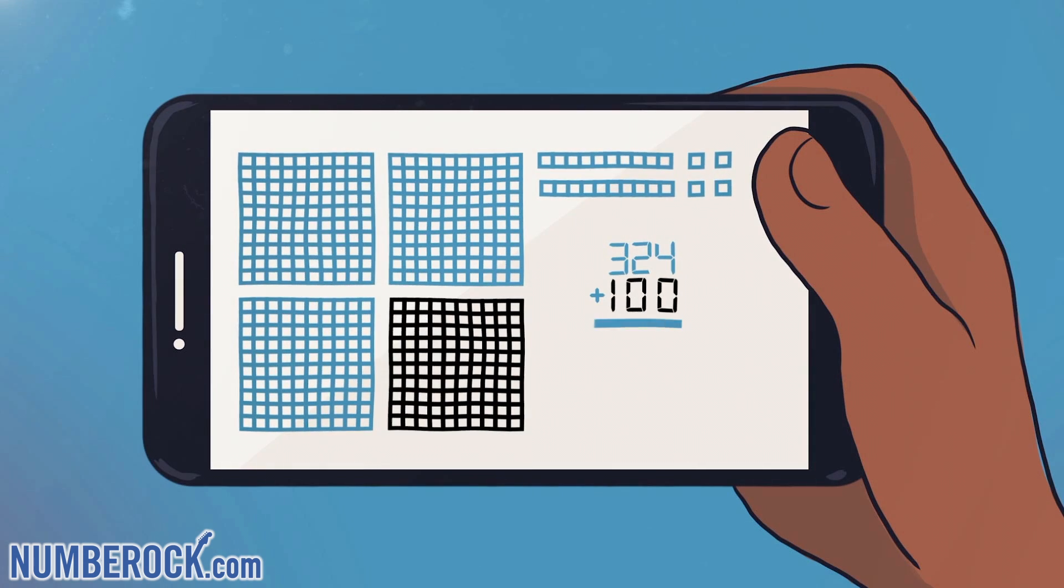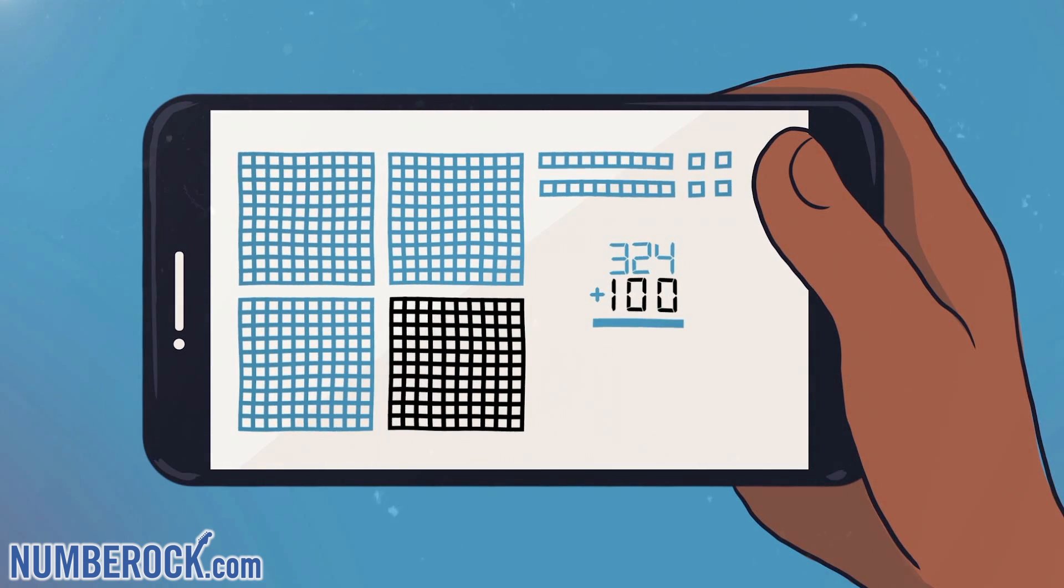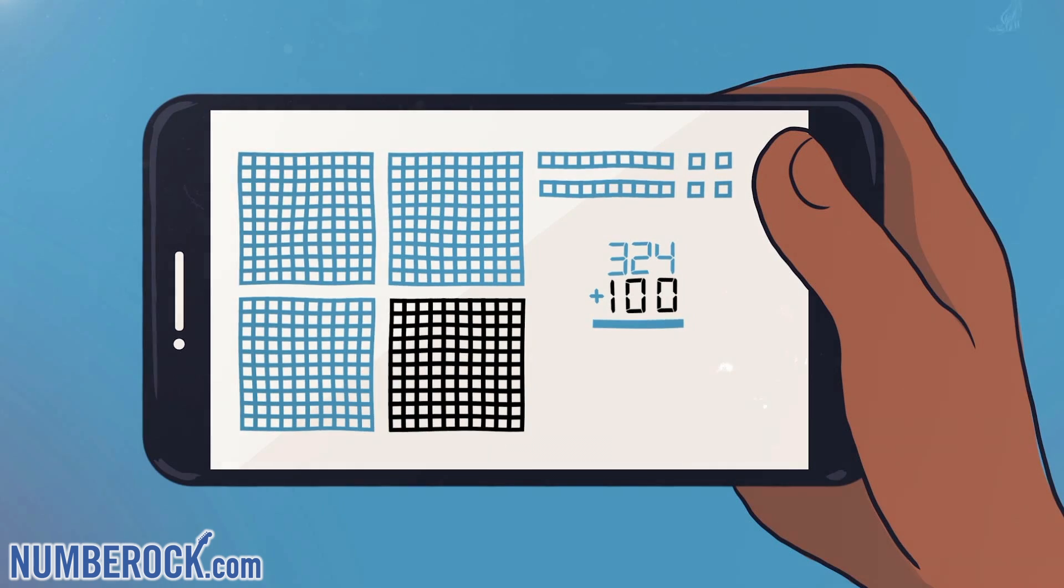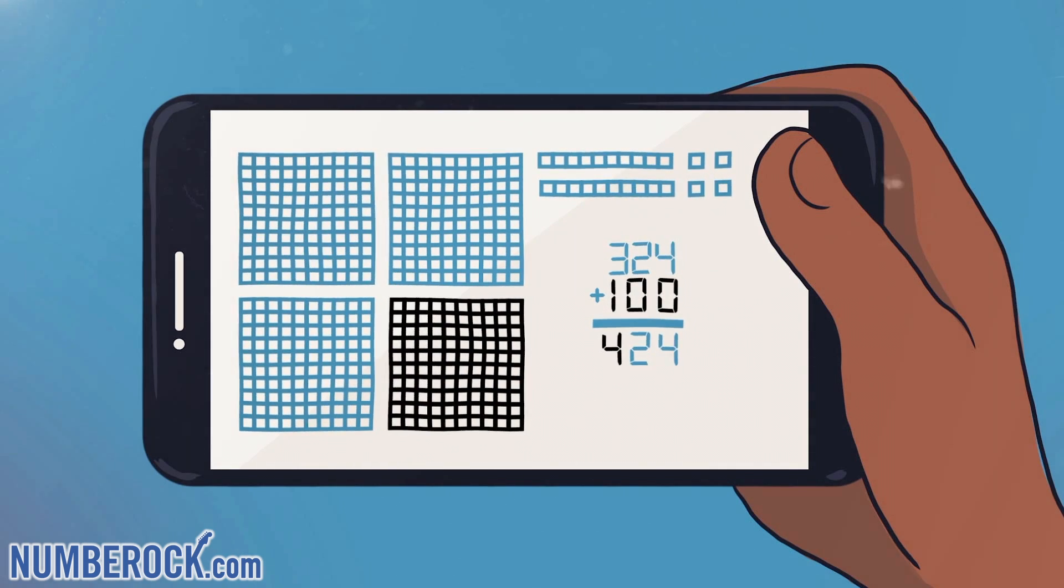Now I'll add 100 instead. With a square representing 100 I'll add it up to find a total score. Is the sum 424?